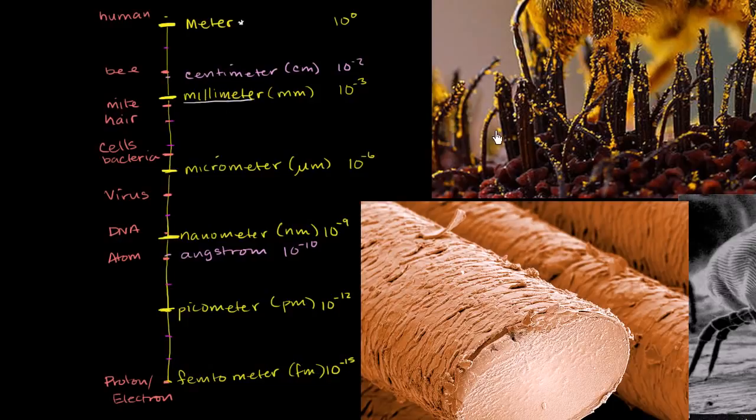If you were to divide each of those millimeters into 1,000 sections, you'd get a micrometer. Or another way to think about a micrometer, it's 1 millionth of a meter.